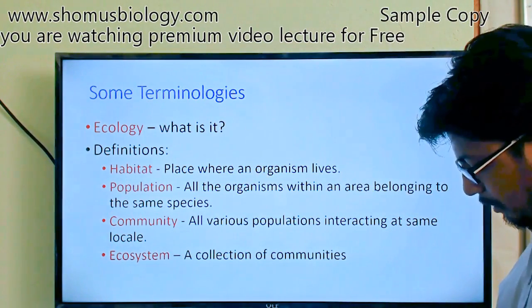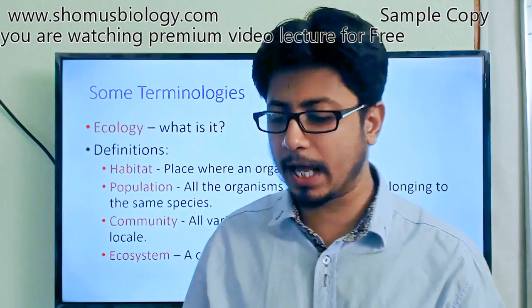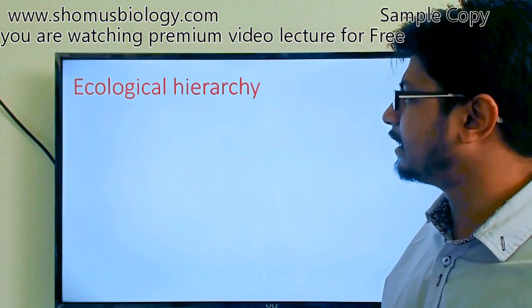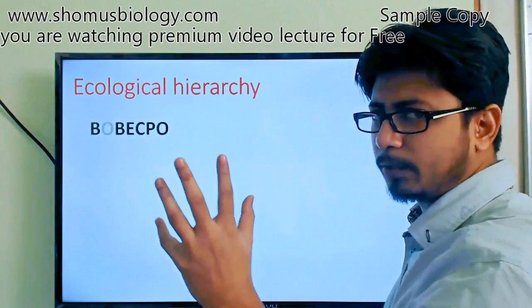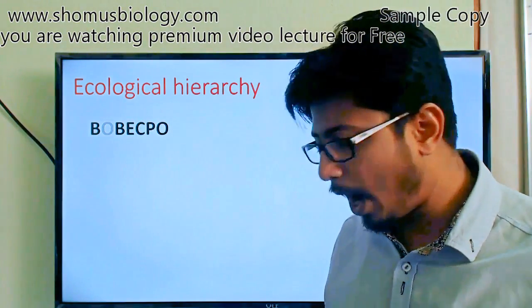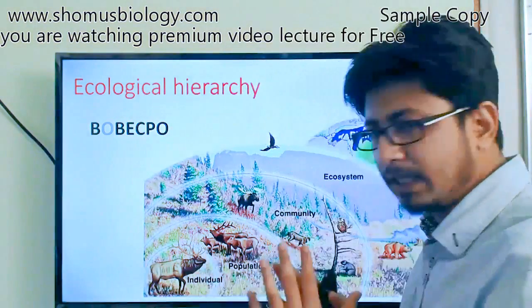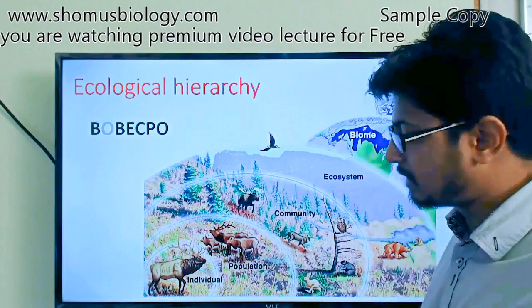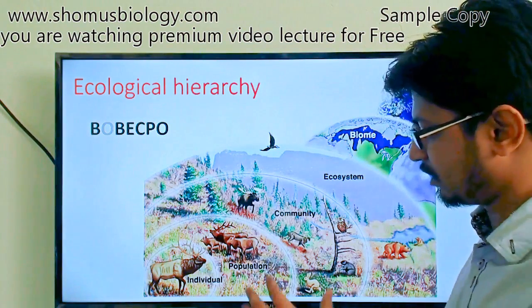The ecosystem follows an organizational hierarchy. An easy way to remember it is with the mnemonic BOBEK PO: starting with the individual organism, many individuals of the same species form a population. For example, all cats of the same species together make a population.